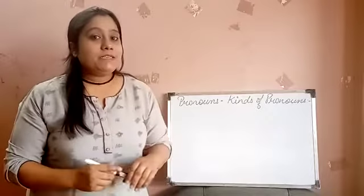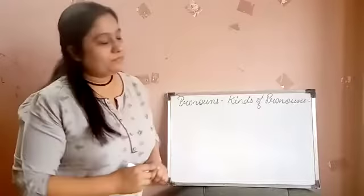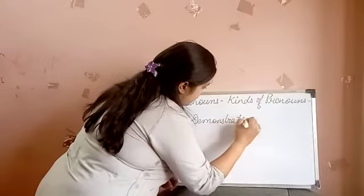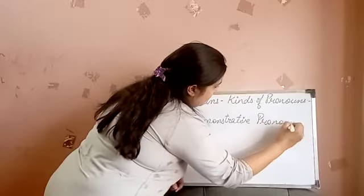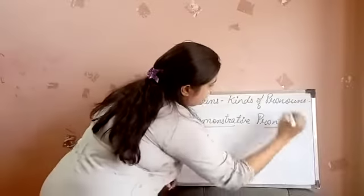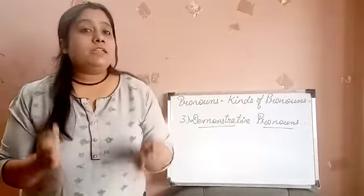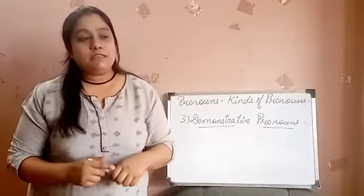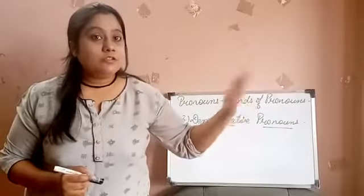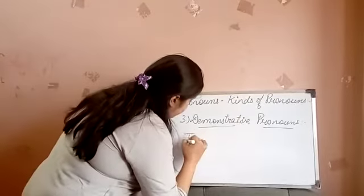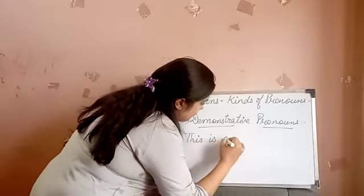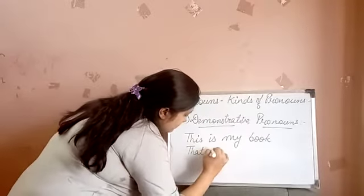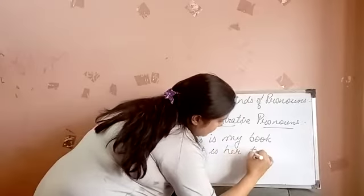Now we are getting towards the third kind of pronoun, that is demonstrative pronouns. Demonstrative pronouns are words that point out things, persons, or animals in a sentence. For example: this, that, these, those — like 'this is my book' and 'that is her pen.'